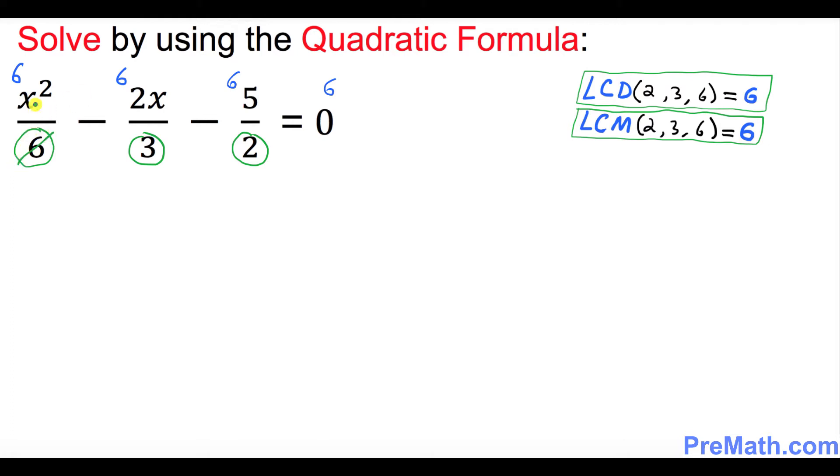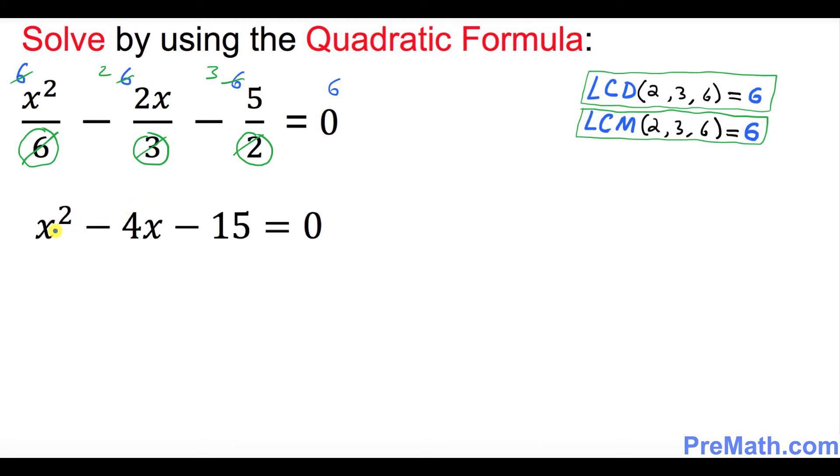So this 6 and 6 is gone. Over here 3 goes into 6 twice. So over here 2 goes into 6 three times. So our simplified quadratic equation is x² - 4x - 15 = 0. This is our quadratic equation and we will be using now our quadratic formula to solve for x.